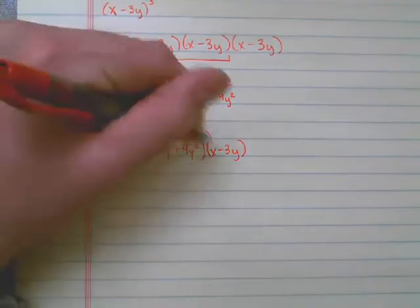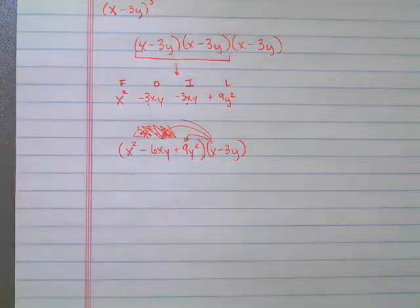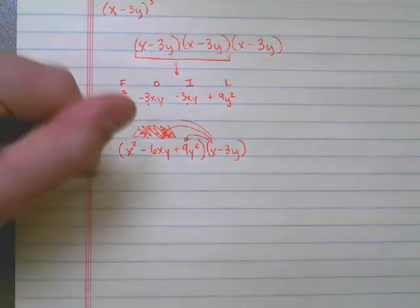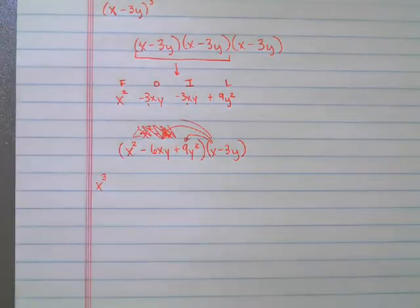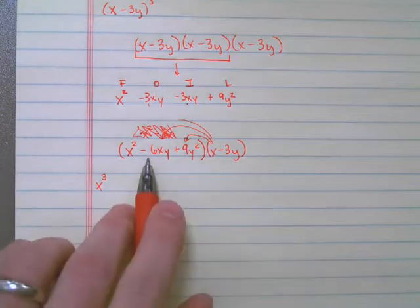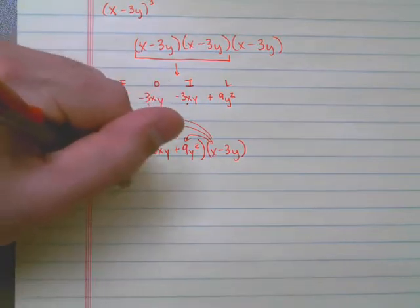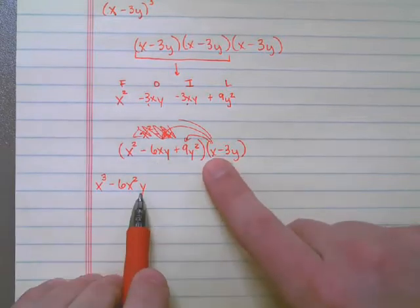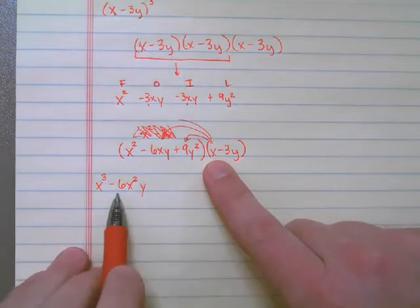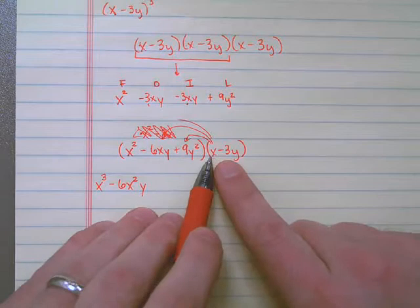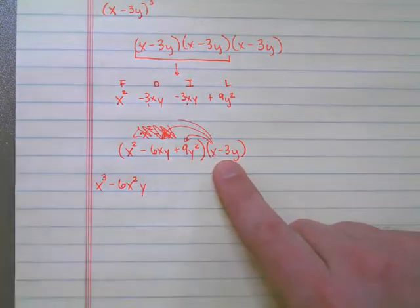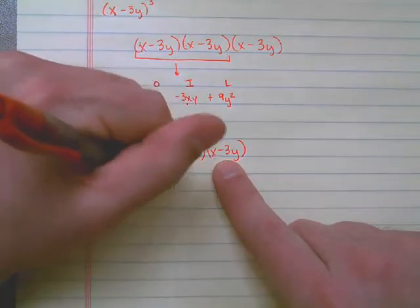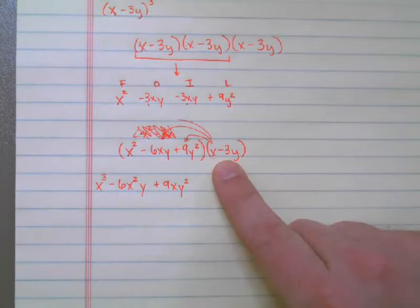If I take this x and distribute it to each term, if I multiply it by each thing, I'm going to have x times x squared, that gives me x cubed. I have x times negative 6xy, which gives me negative 6x squared y. Notice that I have x times x is x squared. Then I have x times 9y squared, which would be positive 9xy squared. So I'm basically just combining them. So there's the first three.